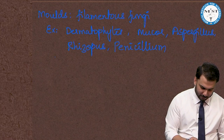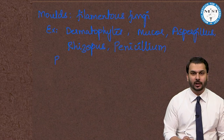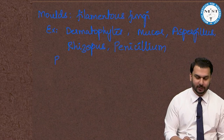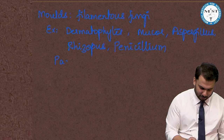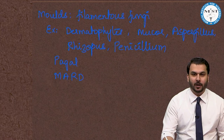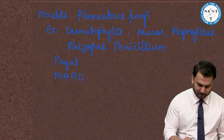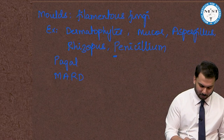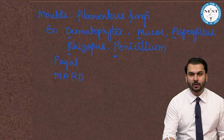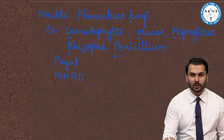We can remember the mold examples using the mnemonic 'Pagal Marth.' This stands for Penicillium, Mucor, Aspergillus, Rhizopus, and Dermatophytes — these are the organisms included under the category of molds.